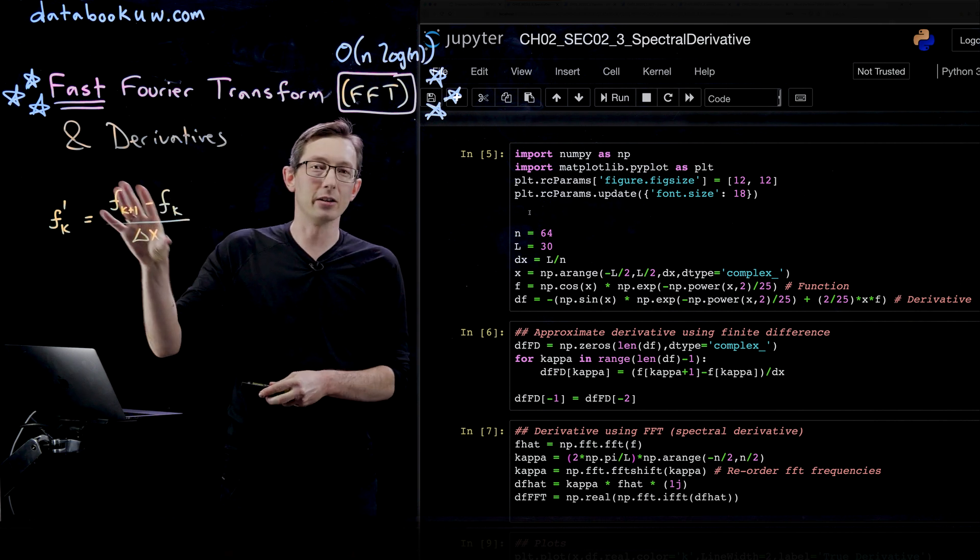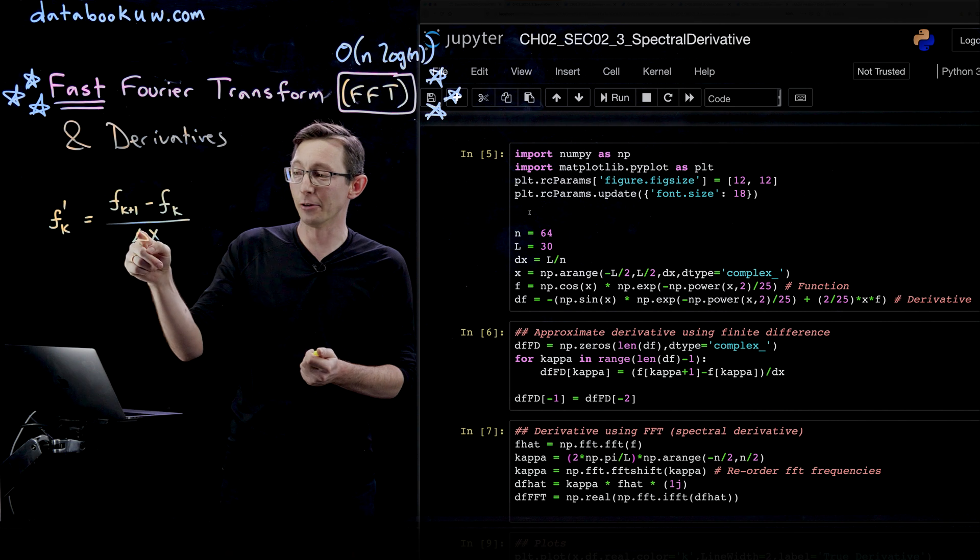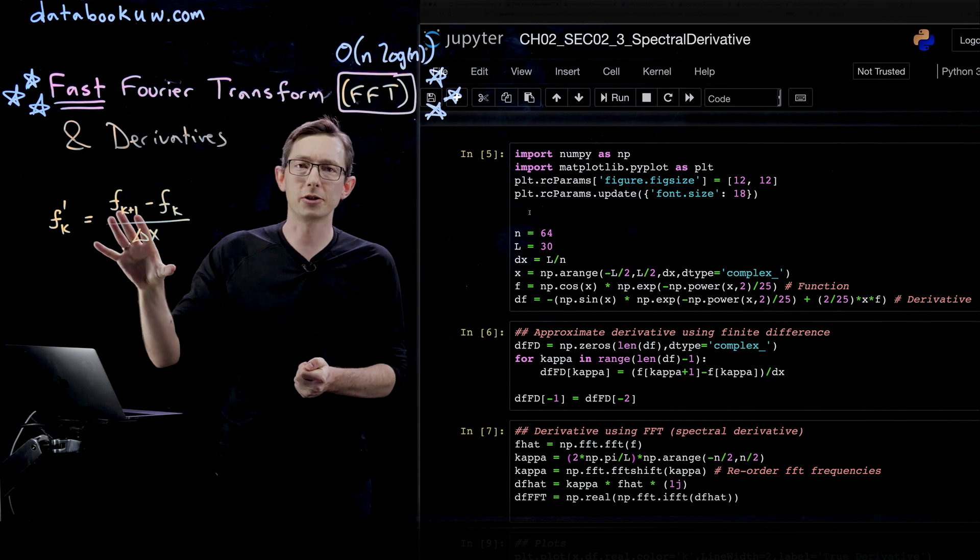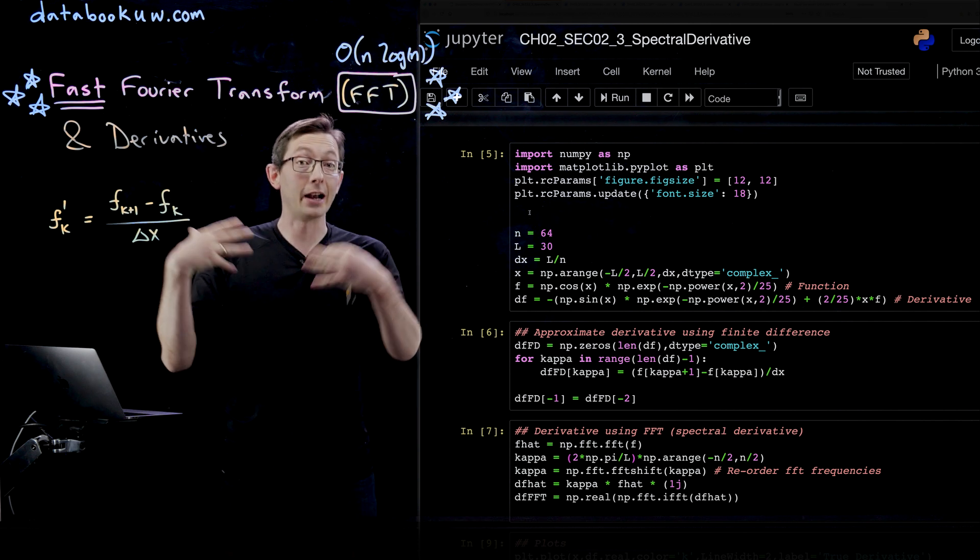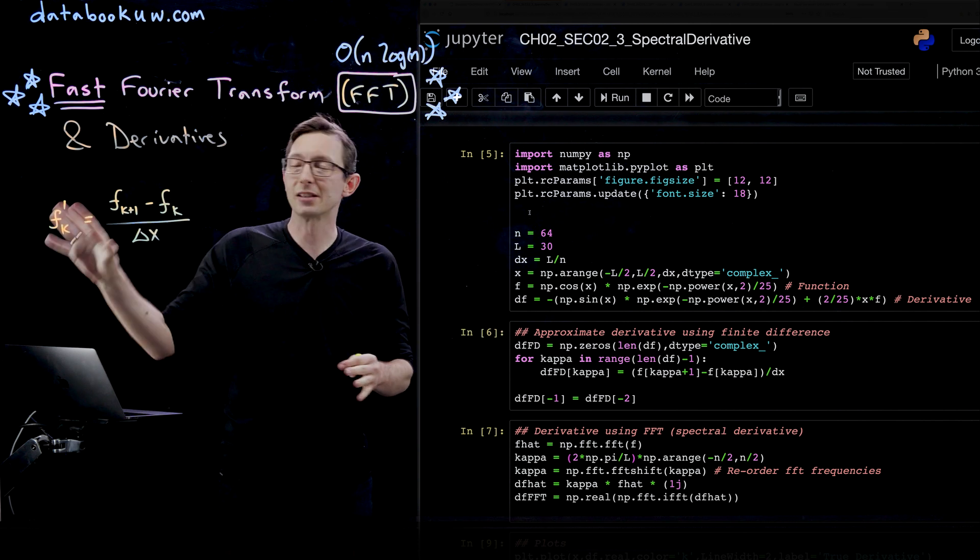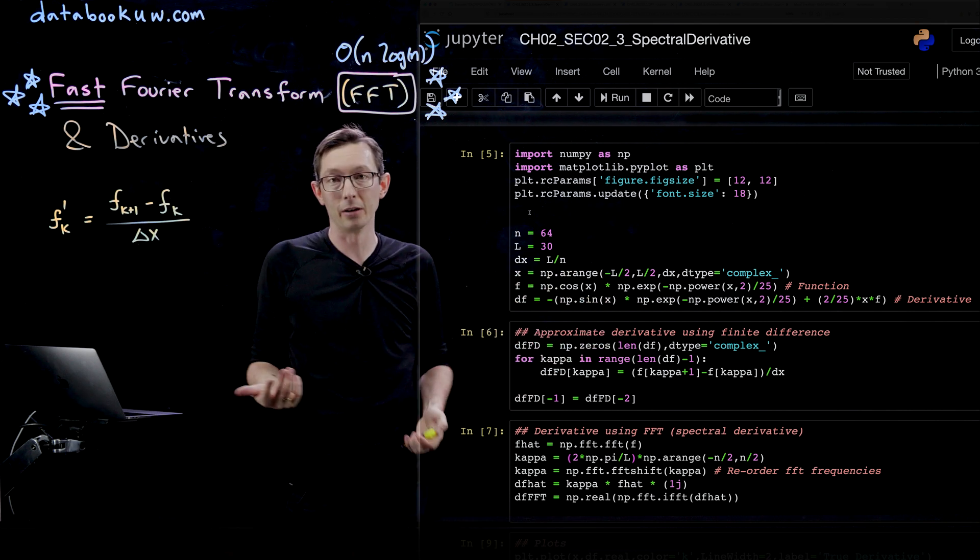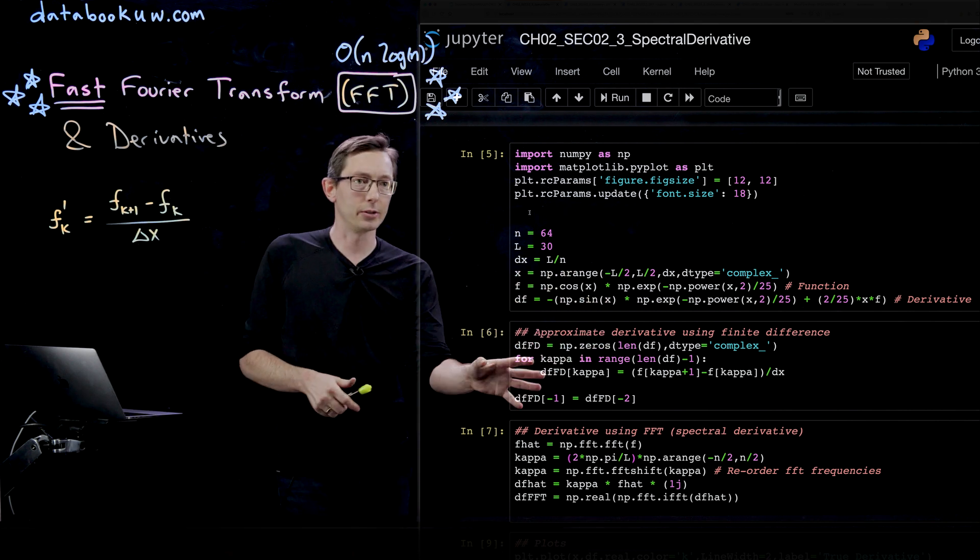We know that this is not a very good approximation of the derivative. This has error that scales like delta x, order delta x error. I could do a better job with a central difference or a higher order finite difference, but this is really just to illustrate another way you could compute things.